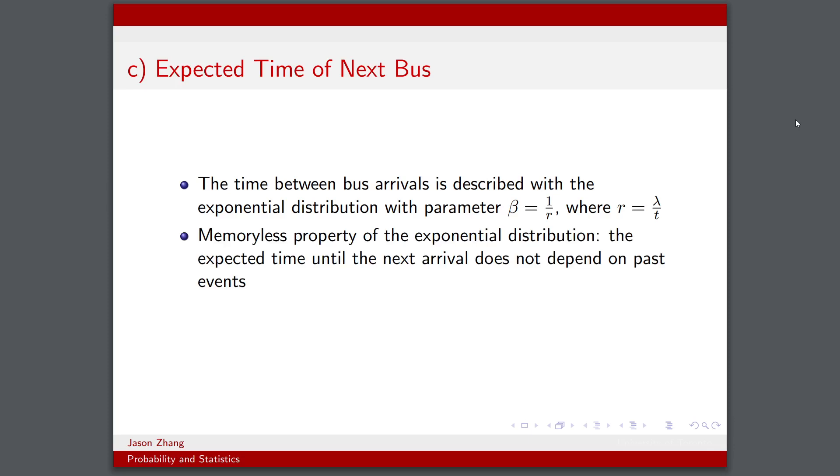And the exponential distribution is really useful to us because we know it has this property called the memoryless property. What this means is that the expected time until the next event or the next arrival does not depend on any past events.